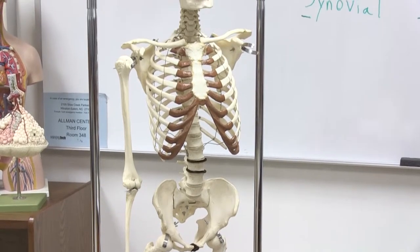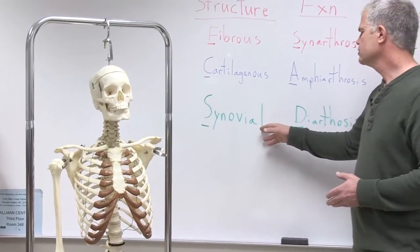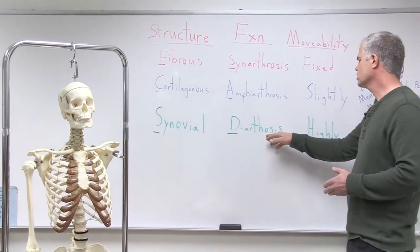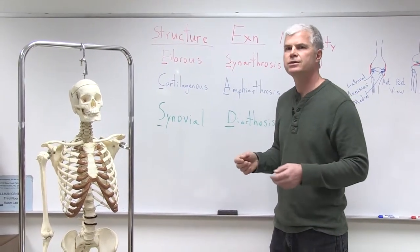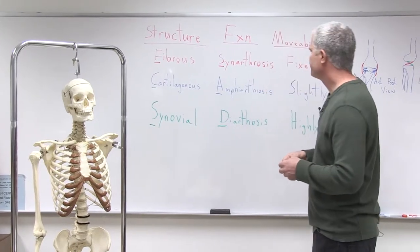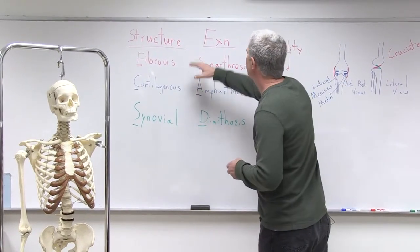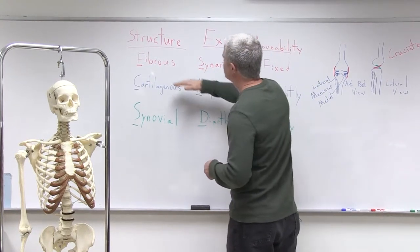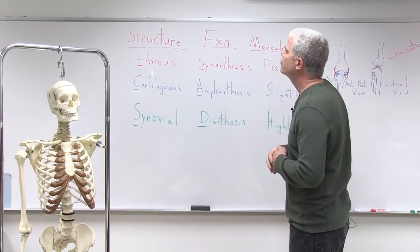And then finally, the one you're most familiar with is the synovial joint. The synovial joints are called diarthrosis functionally, and they are the highly movable joints of your elbow, your wrist, your knee — all of these things you're familiar with as being synovial joints. One way to remember the relationship between structure and function is to take the first letters of these things and make a little mnemonic trick out of it.